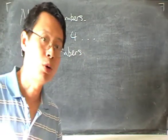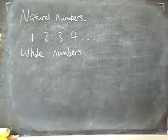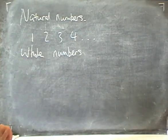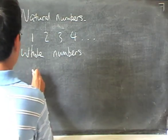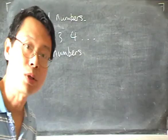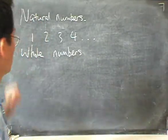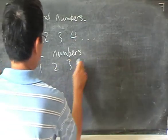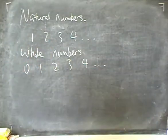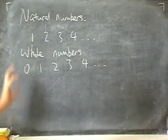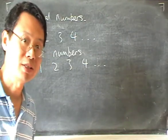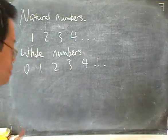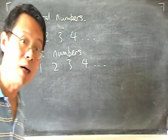Now, then there is the idea of whole numbers. Natural numbers are, in fact, whole numbers. Whole numbers — you can think of it as the same: one, two, three, four — and it could also include zero. That's how I learned it in school; it might or might not be a very strict definition. So for now, let's just think about whole numbers as numbers that we count with.